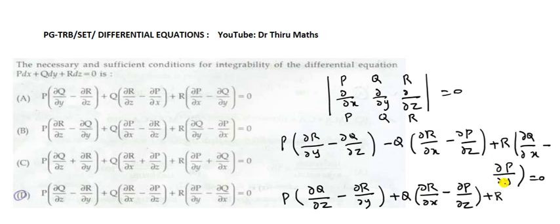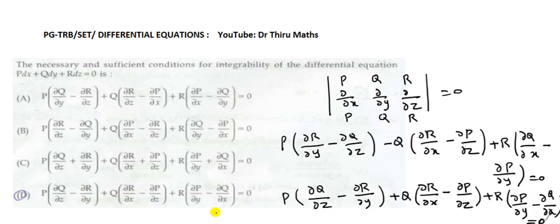Here we are multiplying through by minus signs, so we get: P(∂Q/∂z minus ∂R/∂y) plus Q(∂R/∂x minus ∂P/∂z) plus R(∂P/∂y minus ∂Q/∂x) equal to 0.